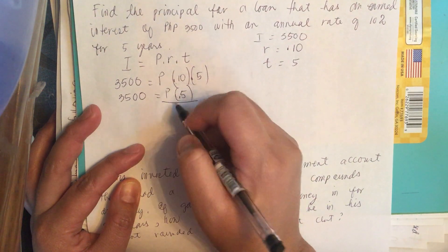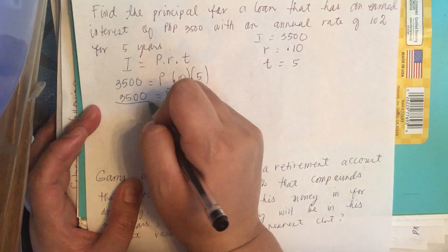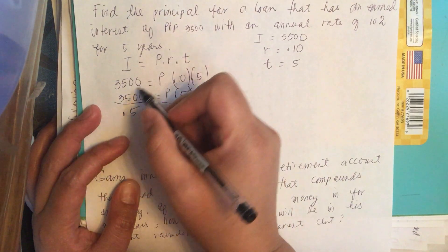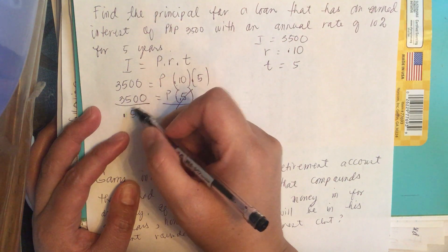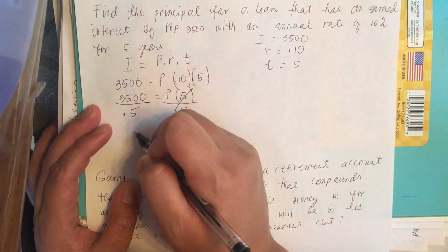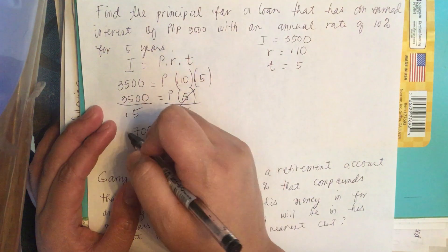0.5 and then we isolate P. So we divide both sides of the equation by 0.5.